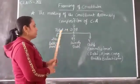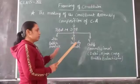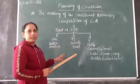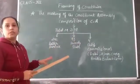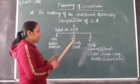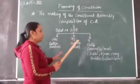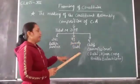The next were 93 members from the princely states — the states where kingship was present at that time. So 93 members were from the princely states.